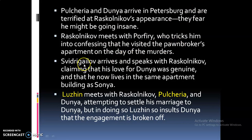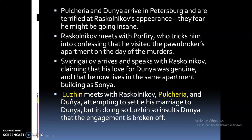Svidrigailov — the employer of Raskolnikov's sister Dunya — arrives and speaks with Raskolnikov, claiming that his love for Dunya was genuine. He mentions that he now lives in the same apartment building where Sonya lives. Luzhin, who is engaged to Dunya, meets with Raskolnikov, Pulcheria, and Dunya attempting to settle the marriage arrangements, but in doing so he insults Dunya so severely that the engagement is broken off.